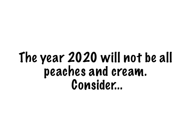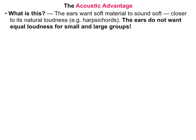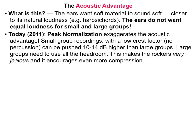But the year 2020 will not be all peaches and cream. Let's consider what I call the acoustic advantage: listeners want soft material to sound soft, closer to its natural loudness — for example, harpsichords. The ears don't want equal loudness for both small and large groups. But today in 2011, peak normalization exaggerates the acoustic advantage. Small group recordings with a low crest factor — that is, no percussion — can be pushed 10 to 14 dB higher than large groups. Large groups need to use all the headroom, so this makes the rockers very jealous and encourages even more compression.